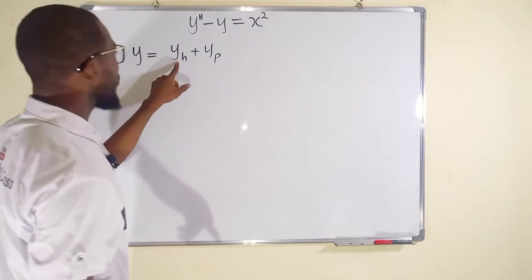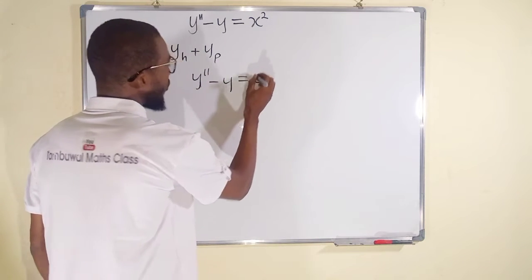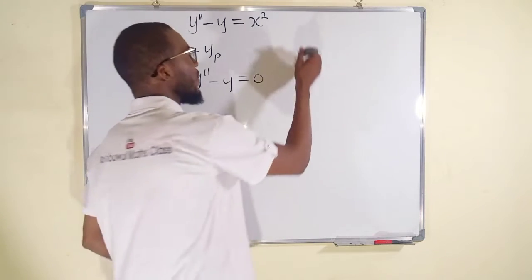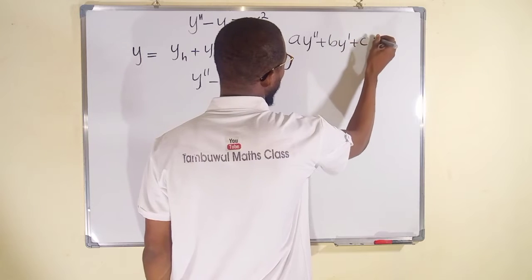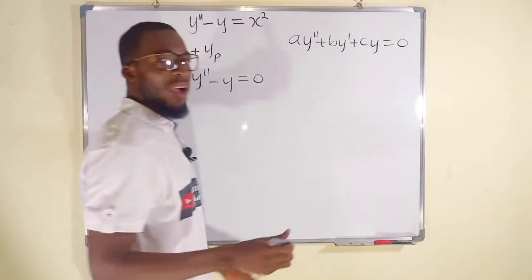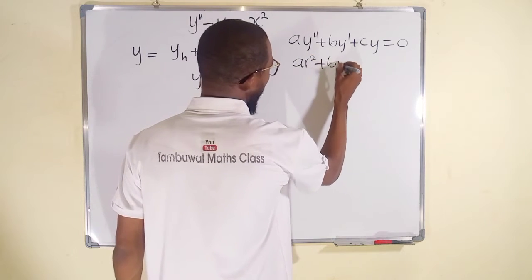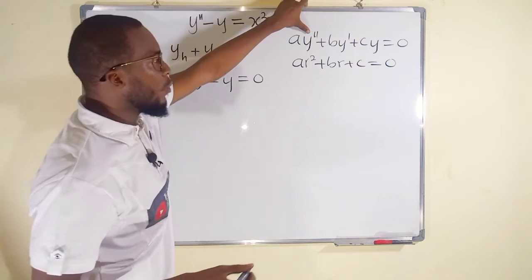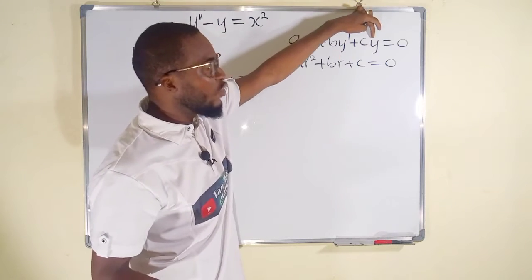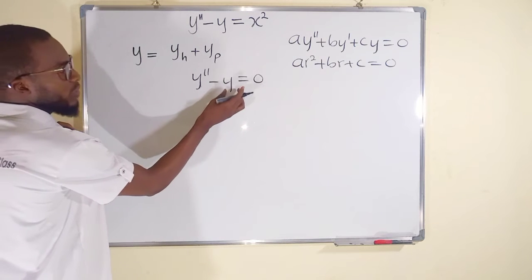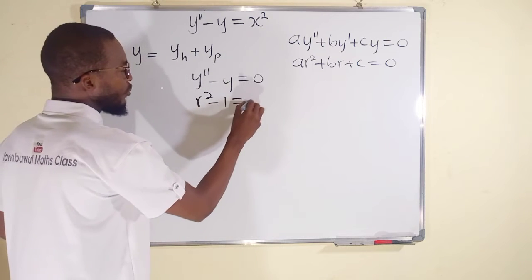First, let us find the solution to the homogeneous differential equation by setting y double prime minus y equal to zero. The general form of the homogeneous type is: a y double prime plus b y prime plus c y equal to zero, where we transform the equation into an auxiliary form: a r squared plus b r plus c equal to zero. Remember, y double prime is replaced by r squared, y prime is replaced with r, and y is replaced with one. So here, y is replaced with one and y double prime with r squared, giving us r squared minus one equal to zero.